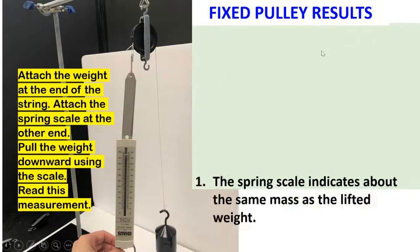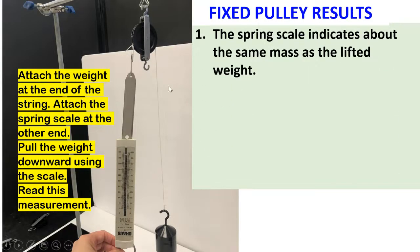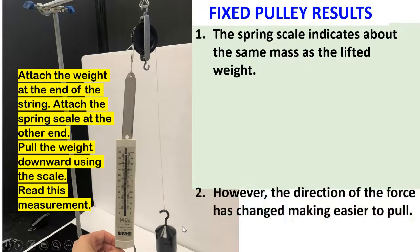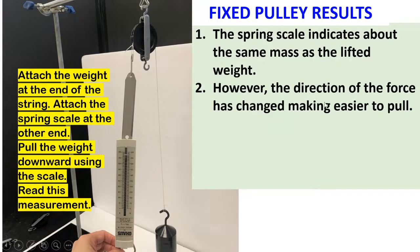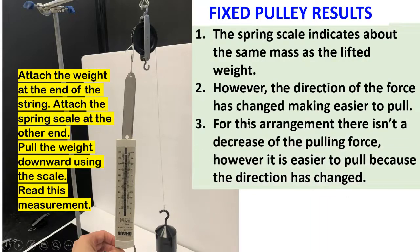Fixed pulley results: the spring scale indicates about the same mass as the lifted weight. However, the direction of the force has changed, making it easier to pull. For this arrangement, there isn't a decrease of the pulling force, but it's easier to pull because the direction has changed.